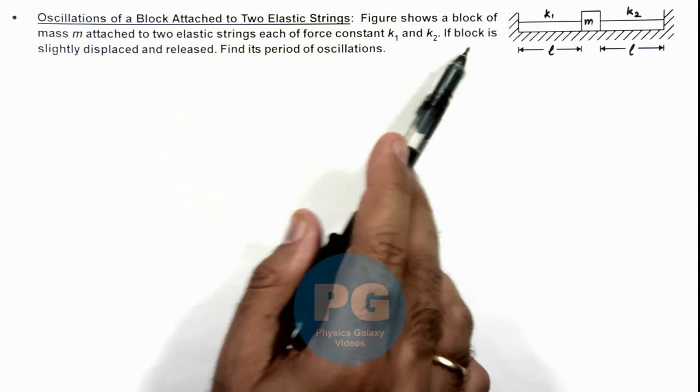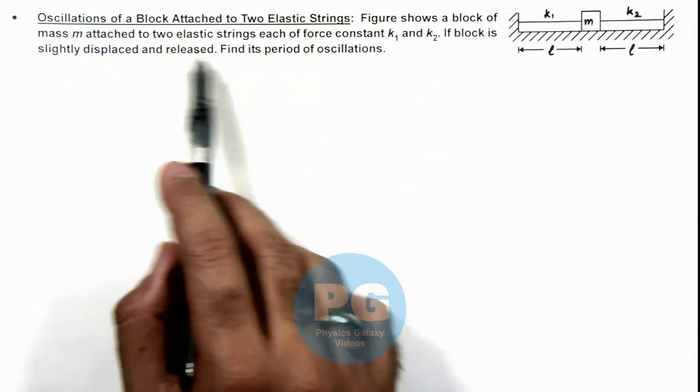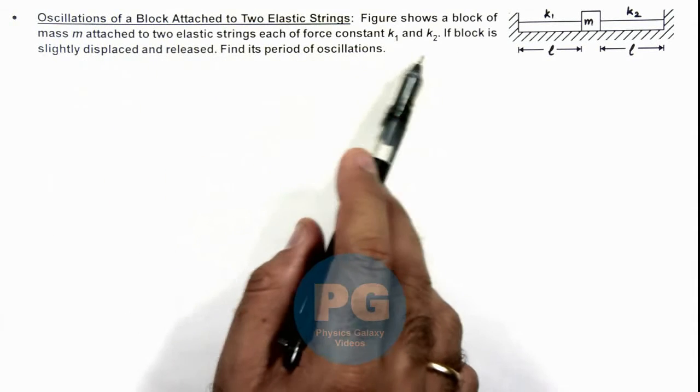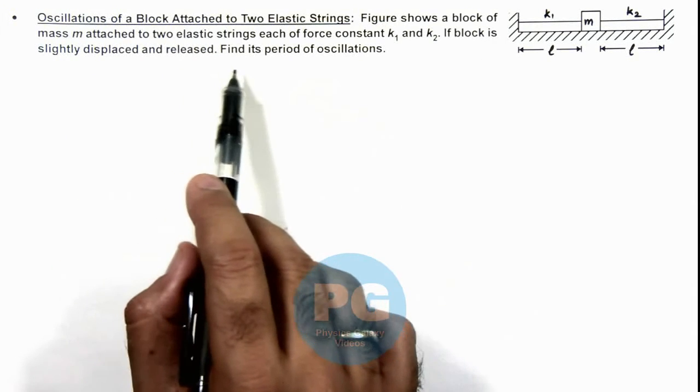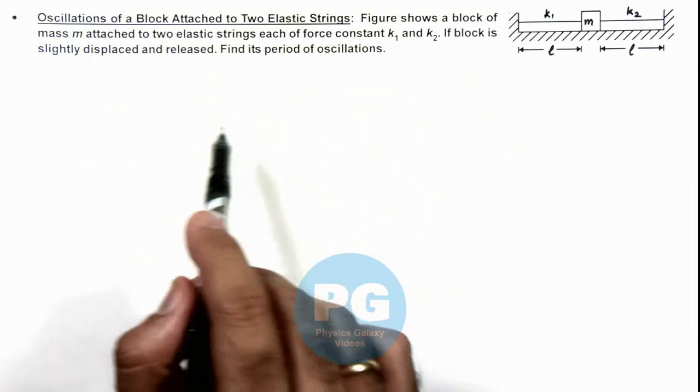The figure shows a block of mass m attached to two strings, each of force constants k1 and k2. If the block is slightly displaced and released, we are required to find the period of oscillations of the block.